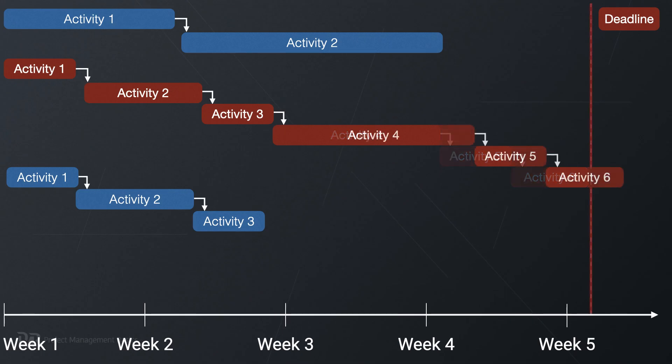Your project management software shows you the longest path through your schedule. Any activity or task on this critical path cannot be delayed — if you delay one of these activities, it will directly impact the project finish date. That's why you should focus your attention on activities on the critical path. For parallel threads, you can and should assign responsibility for each thread to one of your team members or team leads.